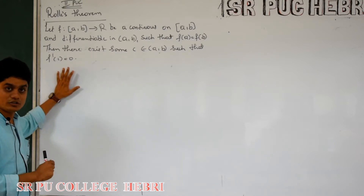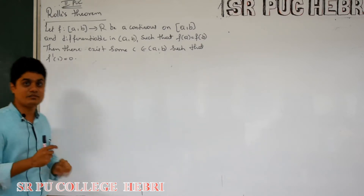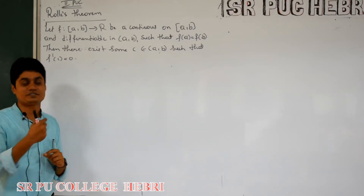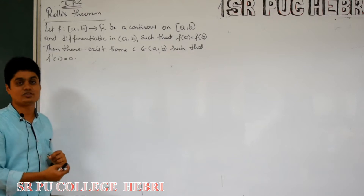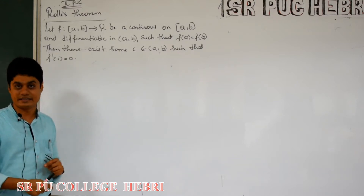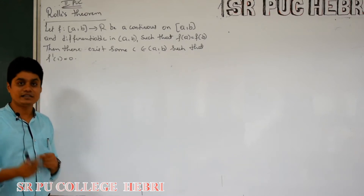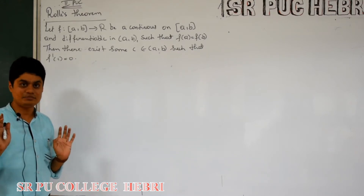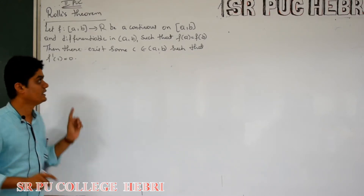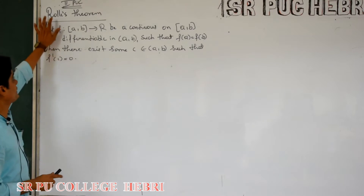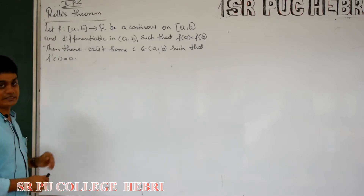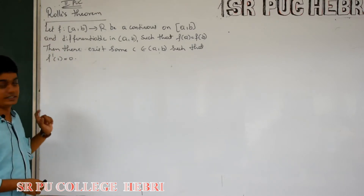I will explain the first concept — the statement of Rolle's theorem — geometrically as well as by taking one example. Similarly, the mean value theorem will also be explained with a statement, geometric interpretation, and an example. After that, we will do exercise problems.